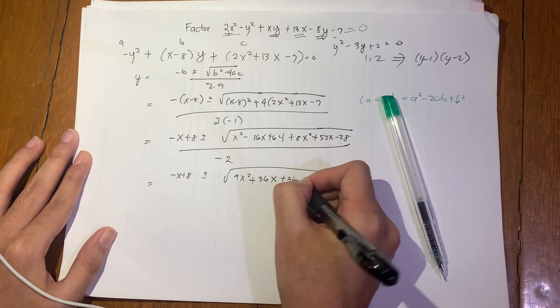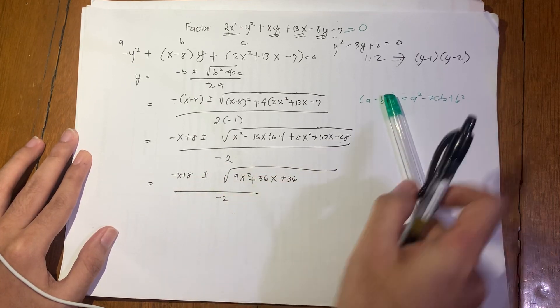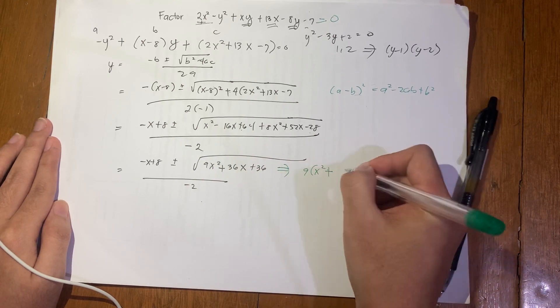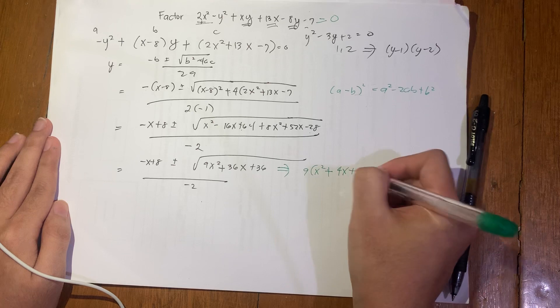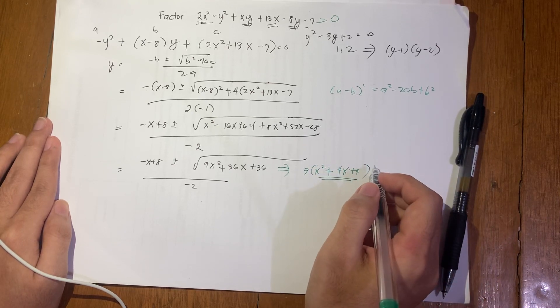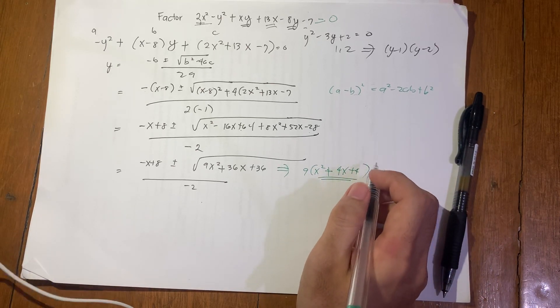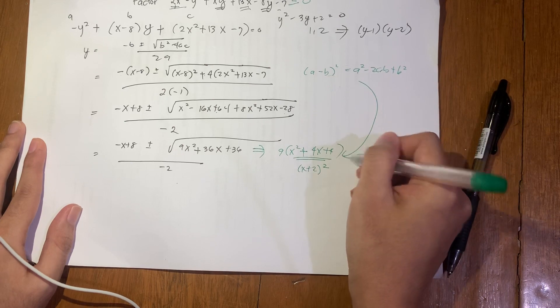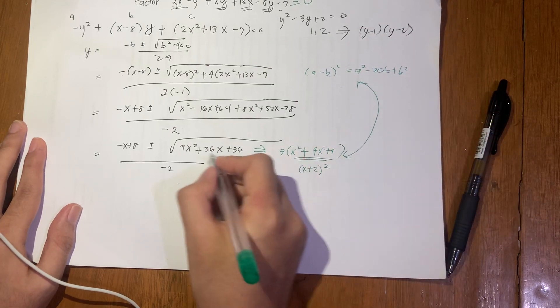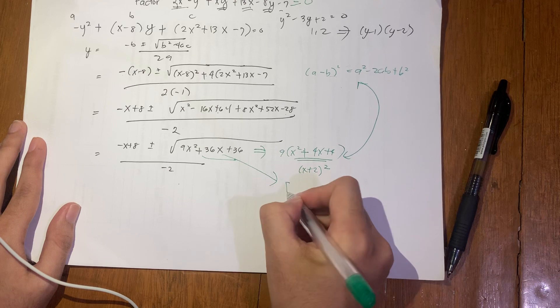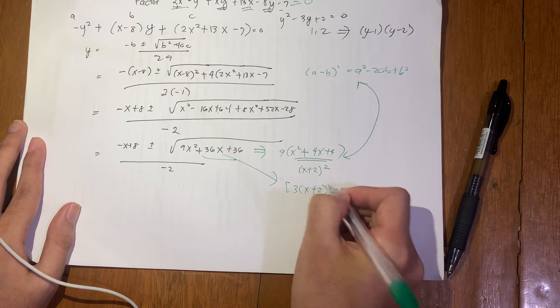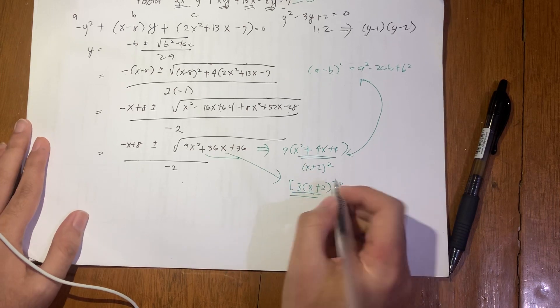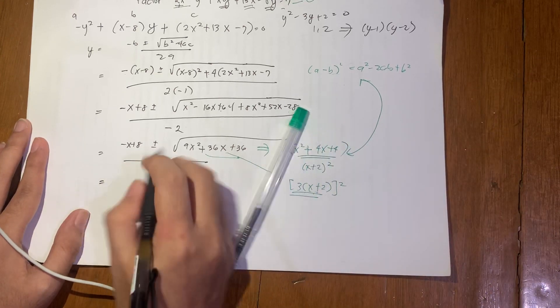This becomes: negative x plus 8 plus minus square root of, using square of a binomial, x squared minus 16x plus 64, then distribute the 4: plus 8x squared plus 52x minus 28, over negative 2. Simplifying what's inside: 9x squared plus 36x plus 36 over negative 2. Note that if I factor out the 9, I get 9 times (x squared plus 4x plus 4), but this term here is a perfect quadratic trinomial.